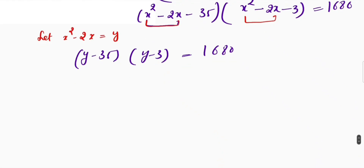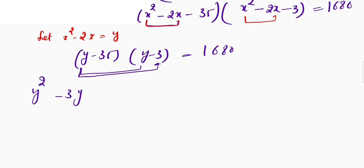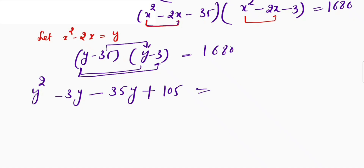Now we will multiply these. So this gives y squared, then I multiply y with negative 3 to get negative 3y, and I multiply negative 35 with y to get negative 35y, and negative 35 with negative 3 — two negatives become positive — so we get plus 105, which is equal to 1680.